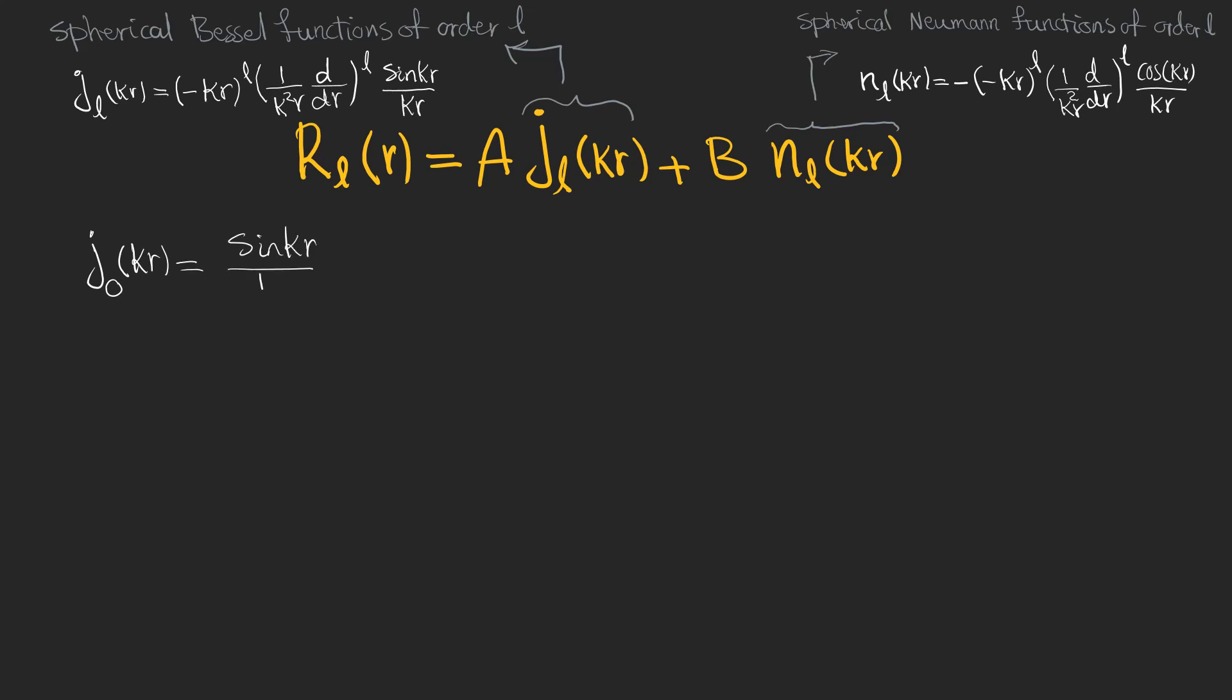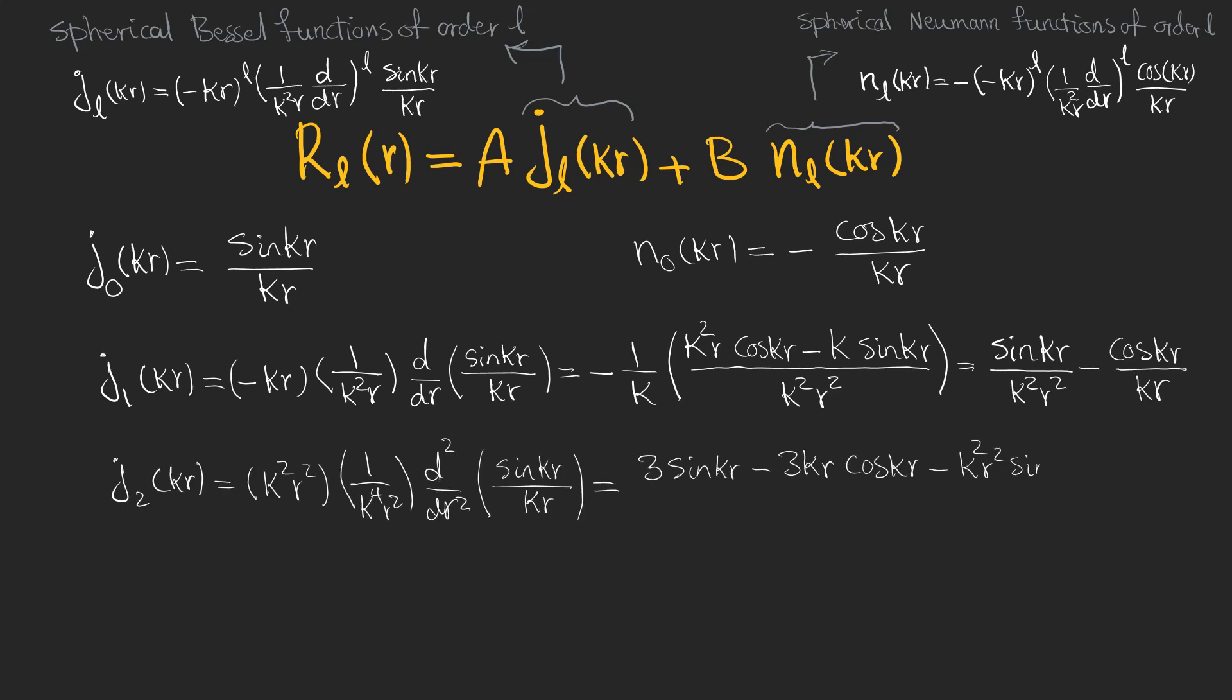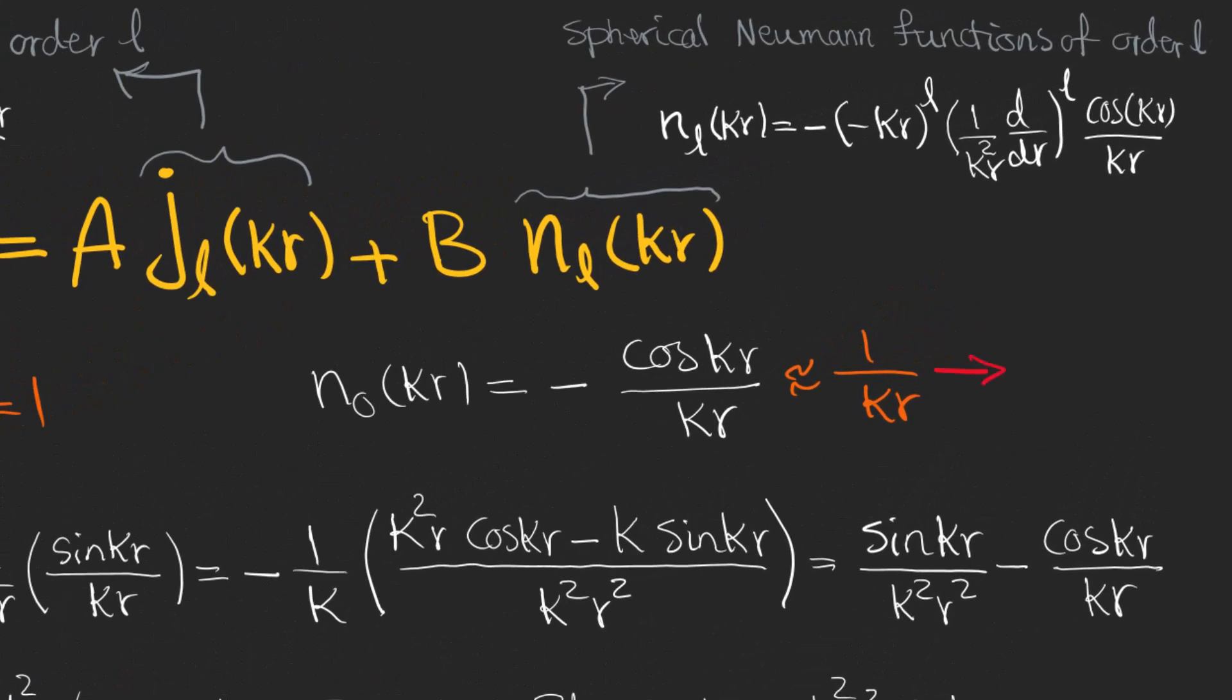For example, these are the answers for L equals 0, and these are two other examples of Bessel functions for L1 and L2. By expanding sine and cosine, we can see the behavior of these functions near the origin. As you can see, the Neumann functions blow up at the center, and as a result, B has to be zero, because we don't want our wave function to be infinite at some point.